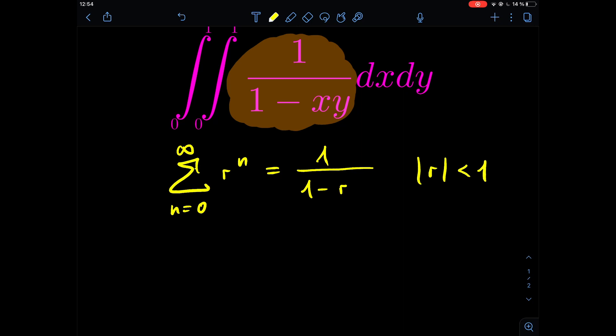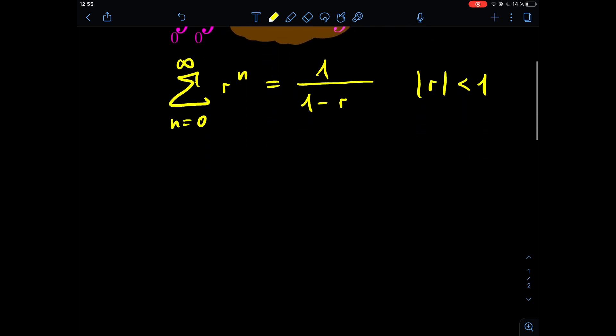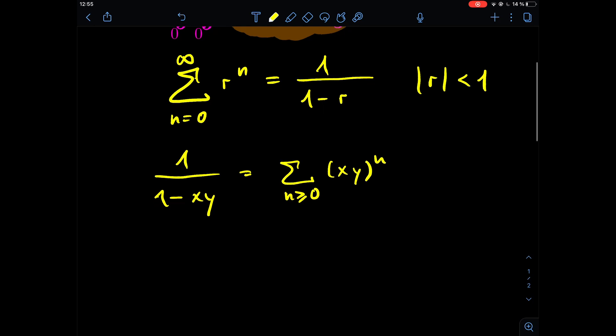In case of our integral, this is definitely the case because our integral is for x and y in both cases from 0 to 1. So we can say that the integrand itself, 1 divided by 1 minus xy, is like the sum over all n being greater or equal than 0 of xy in brackets to the power of n.